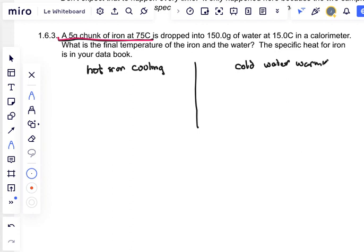Cold water warming. Again these are both temperature changes so they're both going to be mc delta T for the hot iron and mc delta T for the cold water. What do we know?